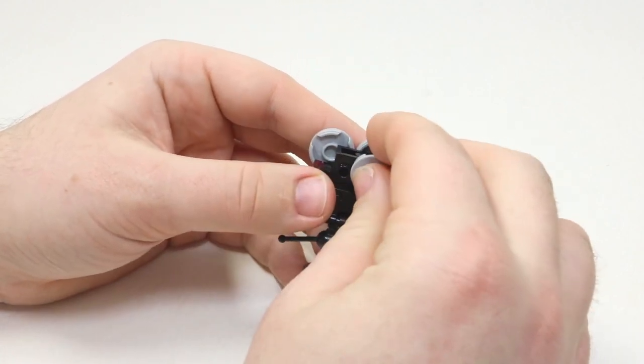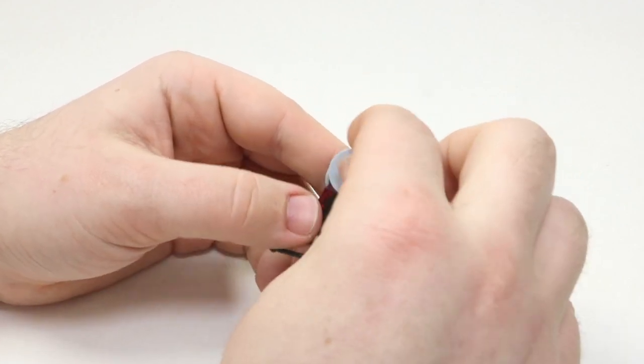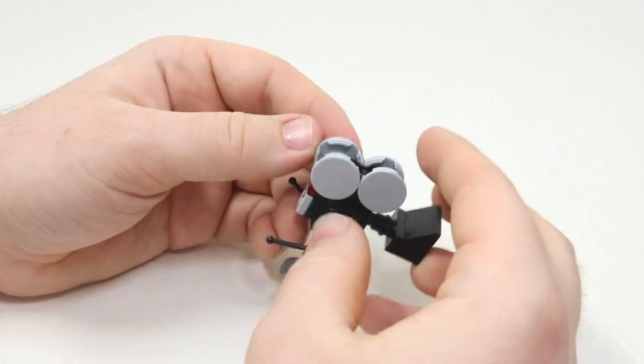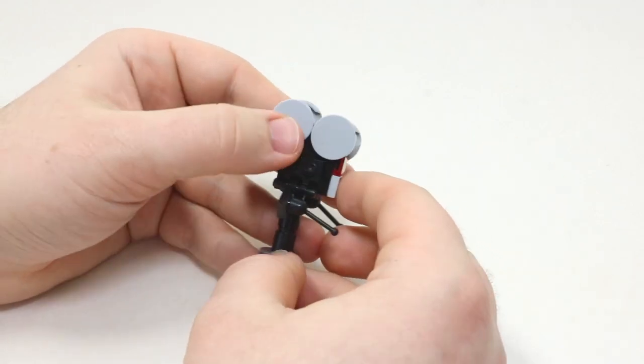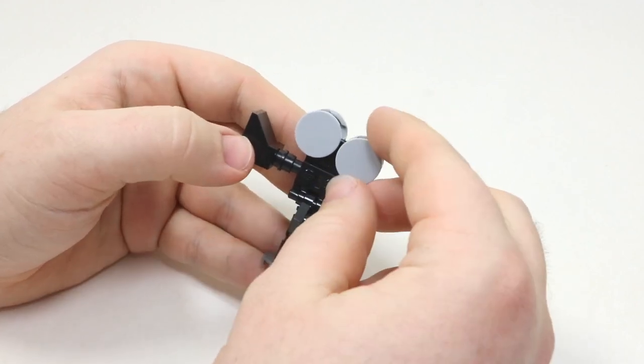And then of course, you're going to want to do the exact same thing to the other side here. As long as they both fit on, you can kind of adjust them however you may like. So that's what it looks like here. One of them is just slightly higher than the other ones here at the back.